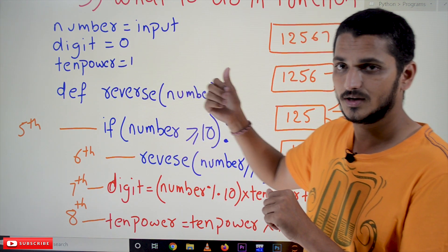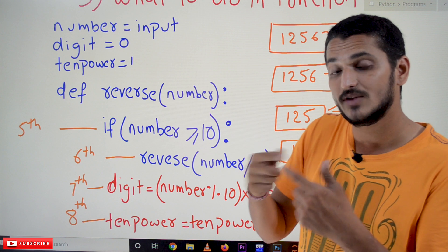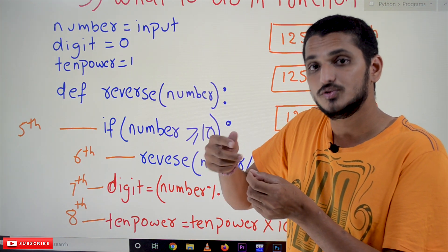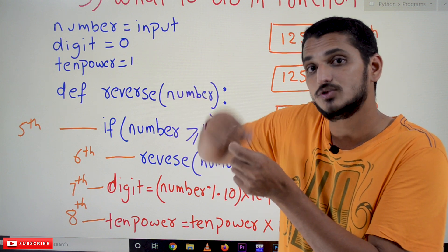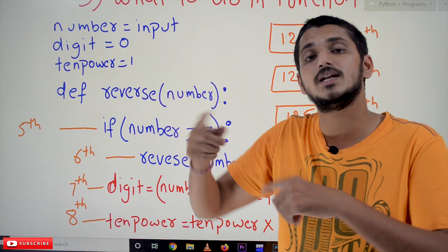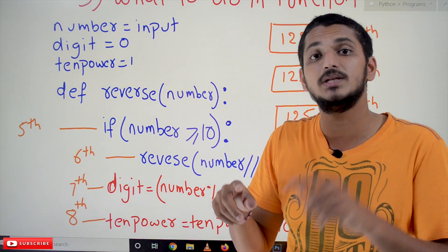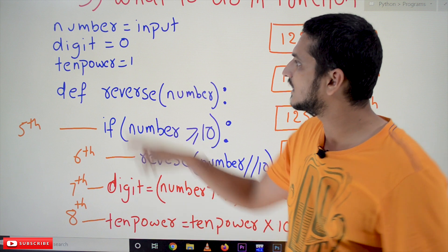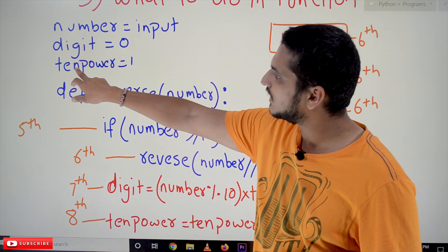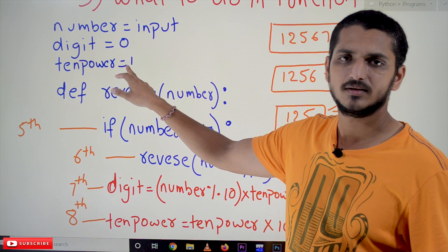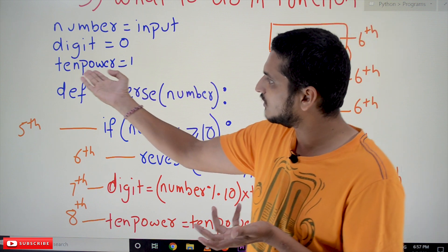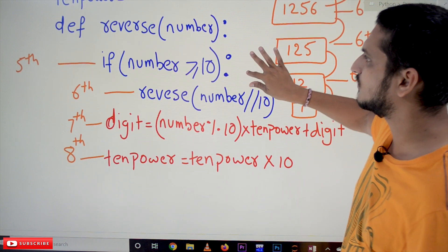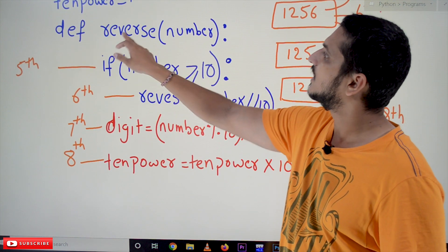Why digit equals 0? Because initially we take digit as 0 and each time we update its new value, which is then used in the next function call. Since the updated value must be accessible by any function, it should be in the global space — that's why digit is a global variable. Similarly, 10_power equals 1 initially, and we'll understand why when we discuss the code.